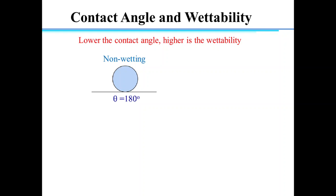Wetting is the ability of a liquid to maintain contact with a solid surface. Wettability is inverse of the contact angle. That means higher the contact angle, lower is the wettability.